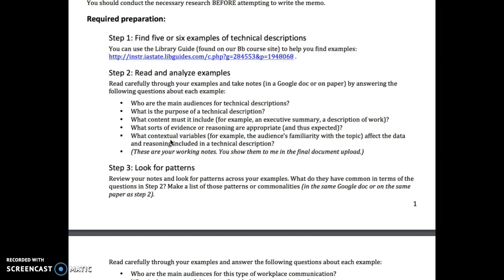The final question is about contextual variables — for example, how the audience's familiarity with the topic affects the kind of data and reasoning included. This relates to how well-informed the writer believes the audience to be: does the audience have high technical expertise in this product or process, or very little? The level of audience understanding will determine the kind of information included and how it's written — these are the contextual variables the writer assumes or knows about the target audience.